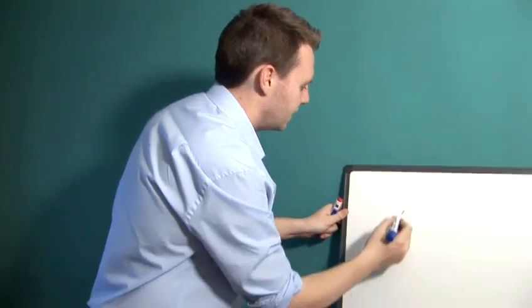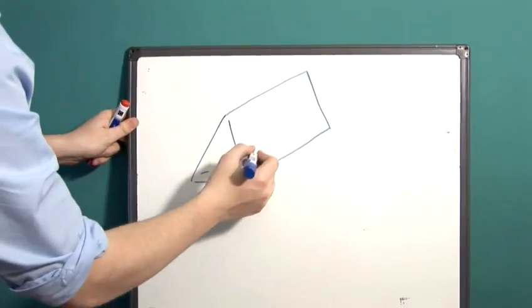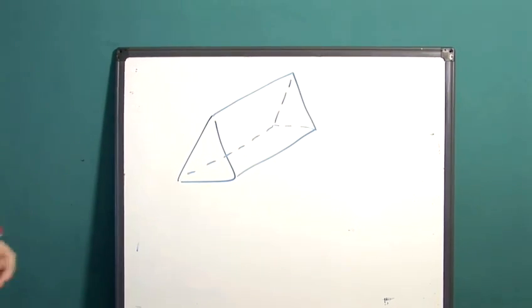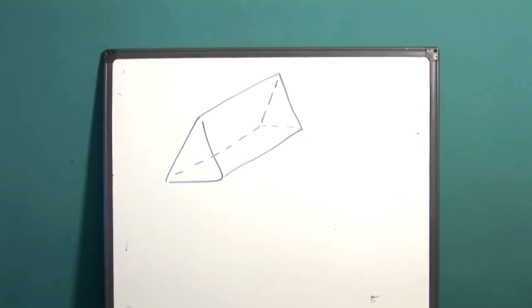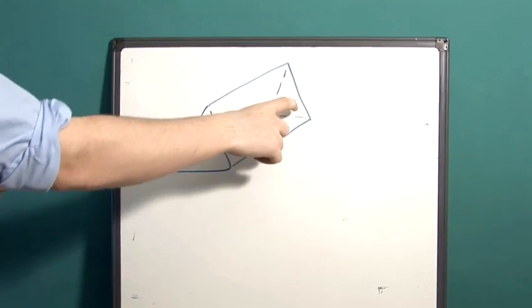Let's work out the surface area of this triangular prism. The key to working out the surface area of a prism of any shape is realizing that you just need to find the areas of each face.